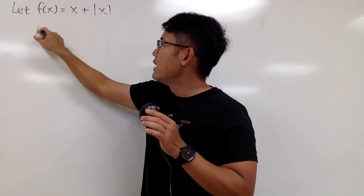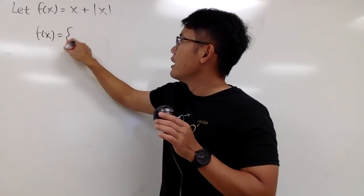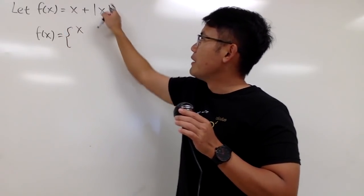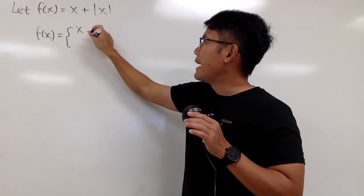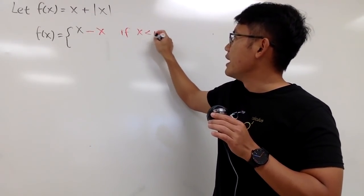So, I will rewrite f of x to be the following. I will first keep the x, but for the absolute value of x, we know this is equal to minus x if x is negative.